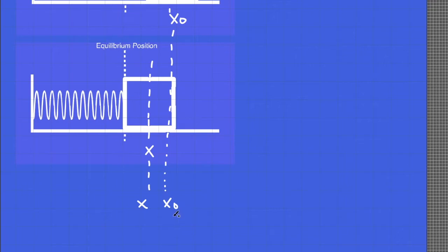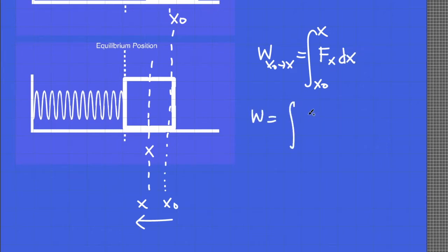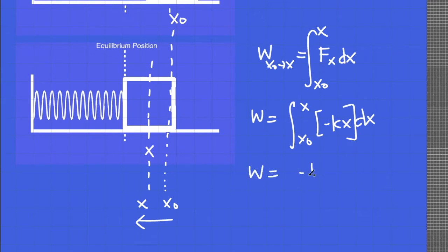During the displacement from x sub 0 to x, we write the work done by the spring on the object as: work from x sub 0 to x equals the force of the spring, F sub x, multiplied by the displacement from x sub 0 to x. Recall that the force exerted by the spring is negative kx, so this becomes the integral of negative kx dx, which equals negative one-half kx squared evaluated from x sub 0 to x.